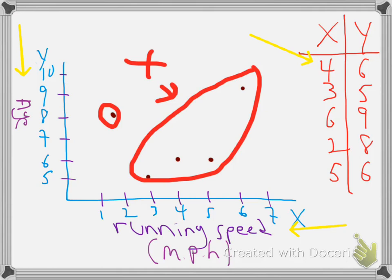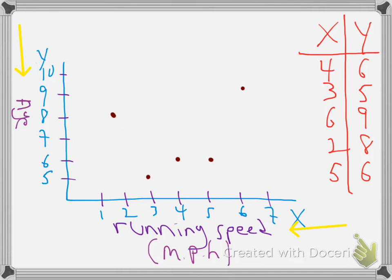Now, the closer the dots are to this kind of upward line, the stronger the correlation is going to be. These dots in this little batch are pretty close together along this kind of imaginary line. But this one over here, this outlier over here is going to weaken the correlation quite a bit.